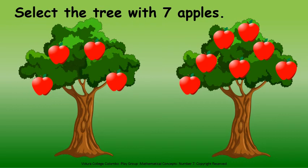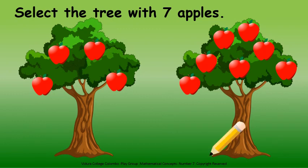There are 2 trees. Shall we count the apples in the first tree? 1, 2, 3, 4. There are 4 apples in the first tree. Now you have to count the apples in the second tree: 1, 2, 3, 4, 5, 6, 7. There are 7 apples in the second tree. We are going to draw a line under this.